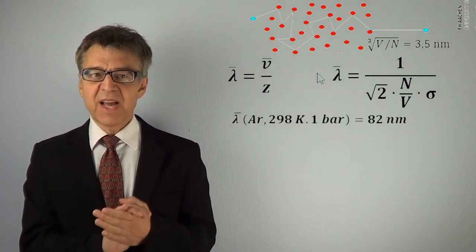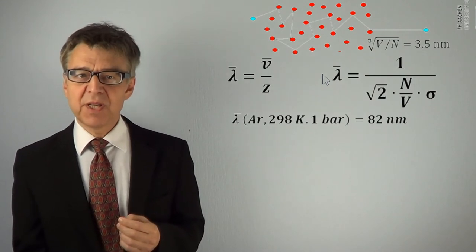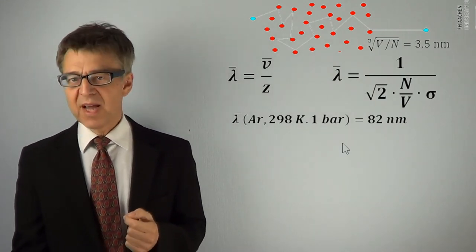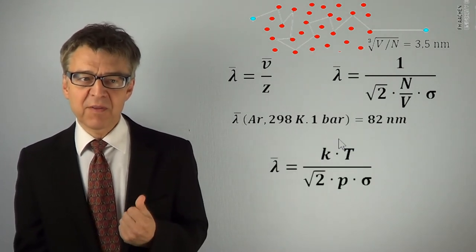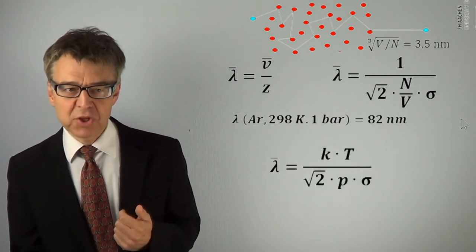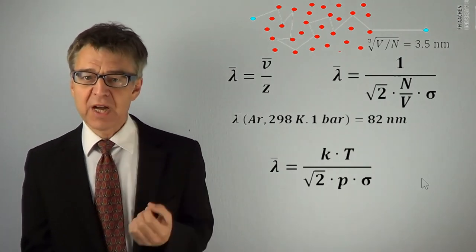The particle density N over V can be calculated as P over KT by using the ideal gas law. Plugging this into our equation, we find that the mean free path is proportional to temperature and inversely proportional to pressure.